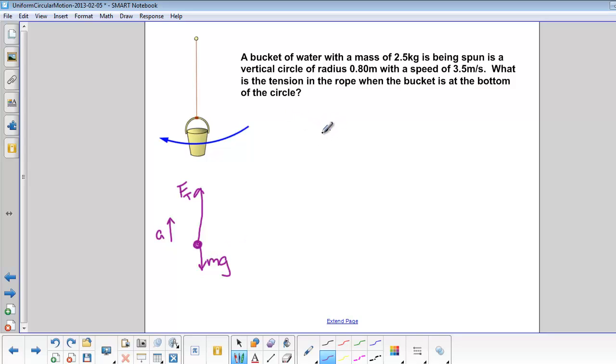Now we can use our free body diagram to do our F equals ma. So the sigma F part is Ft minus Mg. And since it's moving in a circle, A is equal to V squared over R.